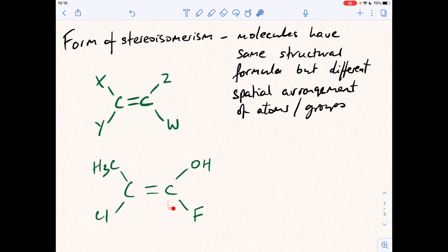So I'll use this specific example to actually illustrate what I'm talking about there. So you can see that I've replaced X with a methyl group, Y is a chlorine atom, Z is an OH group, and W is a fluorine atom. So each carbon of the C=C double bond has got a different atom or group attached. That's different to that. That's different to that.